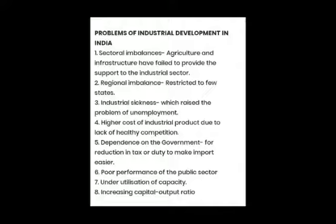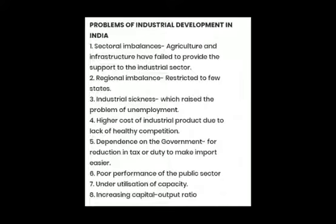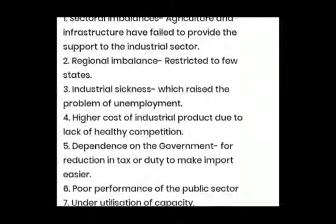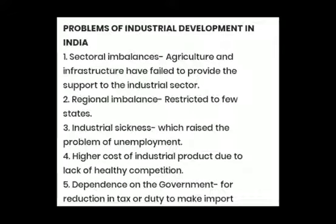Now, the problems associated with industrial development in India. Number 1: Sectoral imbalances — agriculture and industries fail to cooperate with each other, and agriculture and infrastructure fail to provide the necessary prerequisites to support industrial development. Number 2: Regional imbalance — industrial development was confined to limited areas, so it was not all regions in the country that were growing industrially.